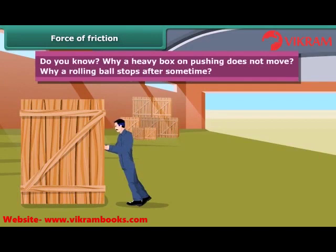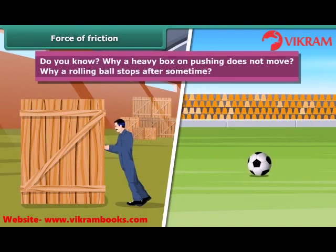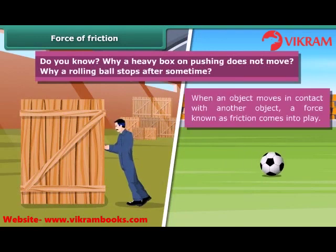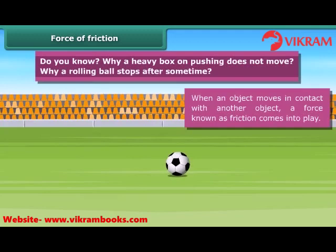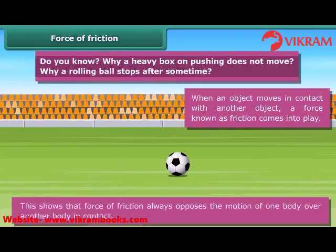Do you know why a heavy box on pushing does not move? Why does a rolling ball stop after some time? When an object moves in contact with another object, a force known as friction comes into play. Note that the force of friction always acts on all objects, and its direction is always opposite to the direction of motion. The moving object gradually slows down and ultimately stops due to the force of friction. This shows that force of friction always opposes the motion of one body over another body in contact.